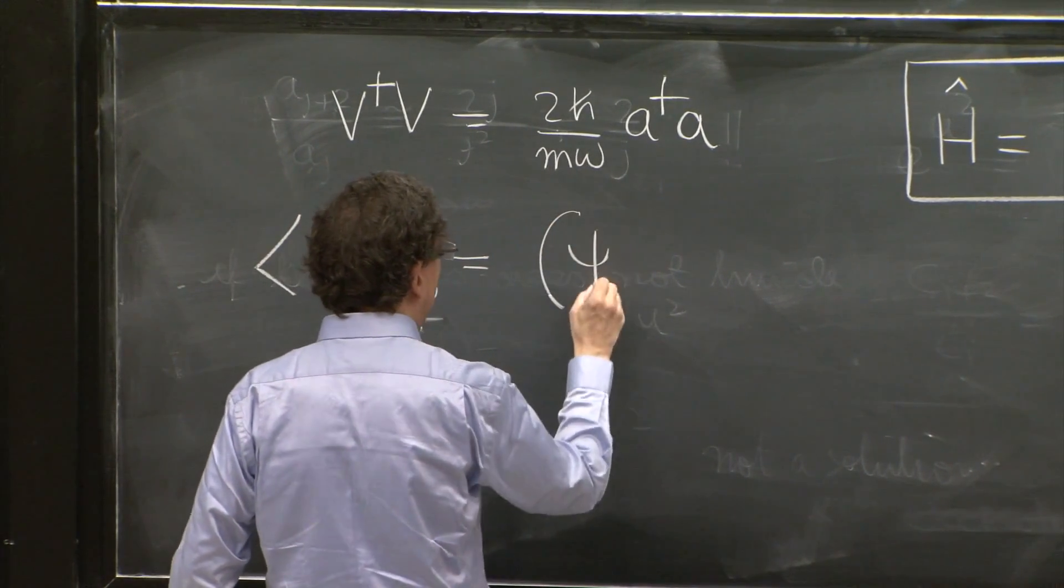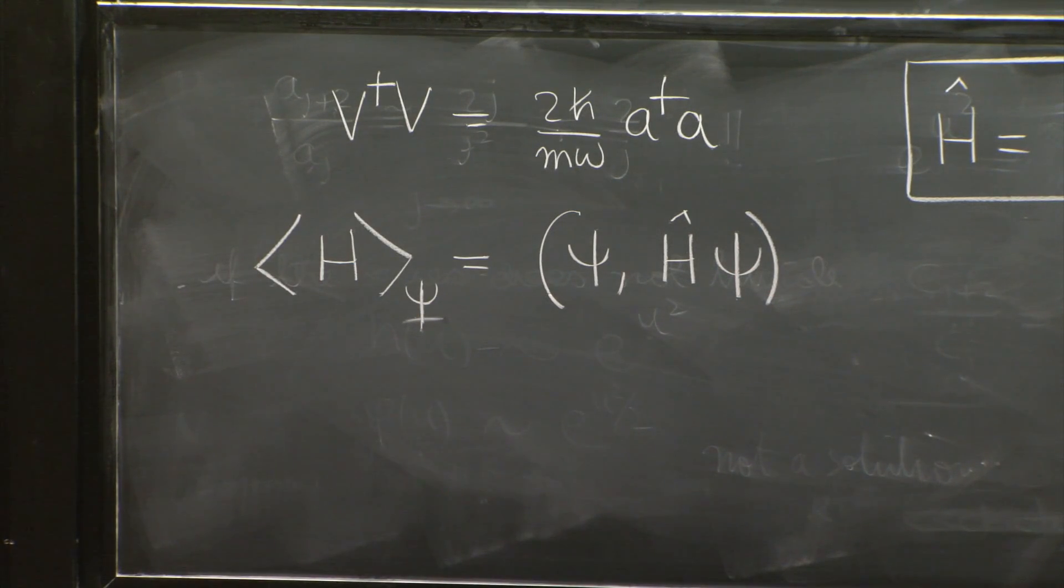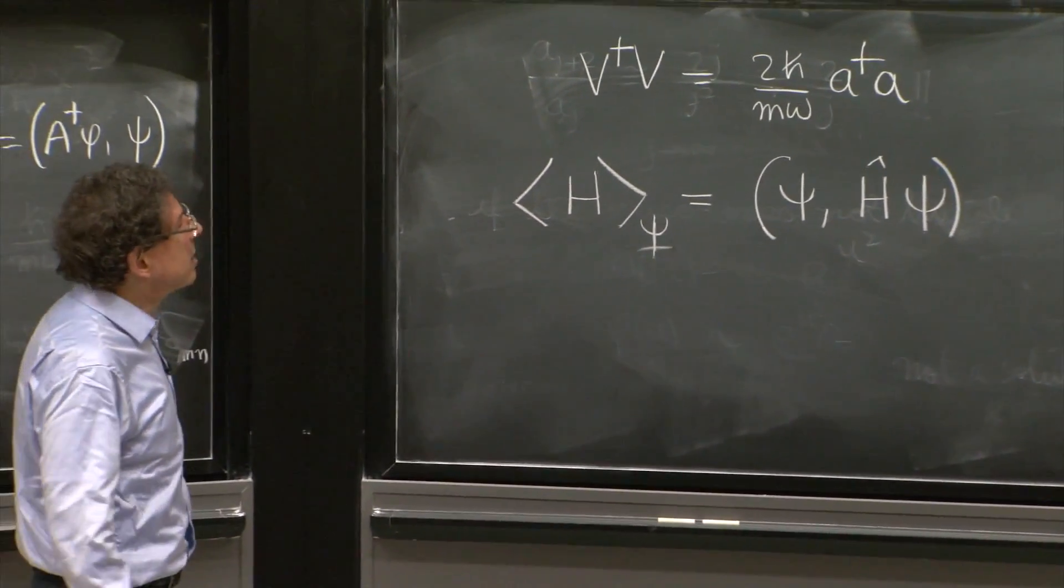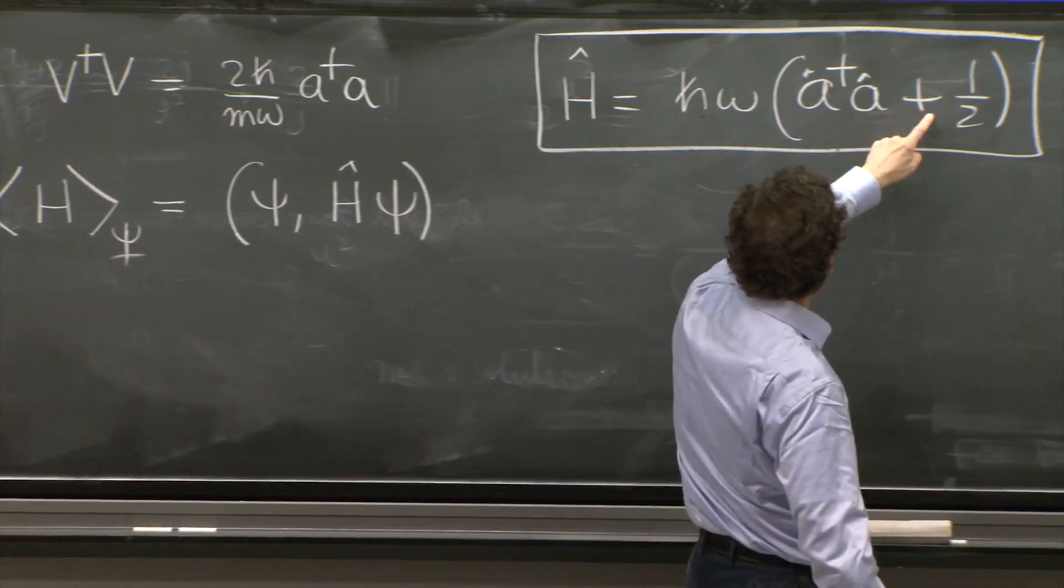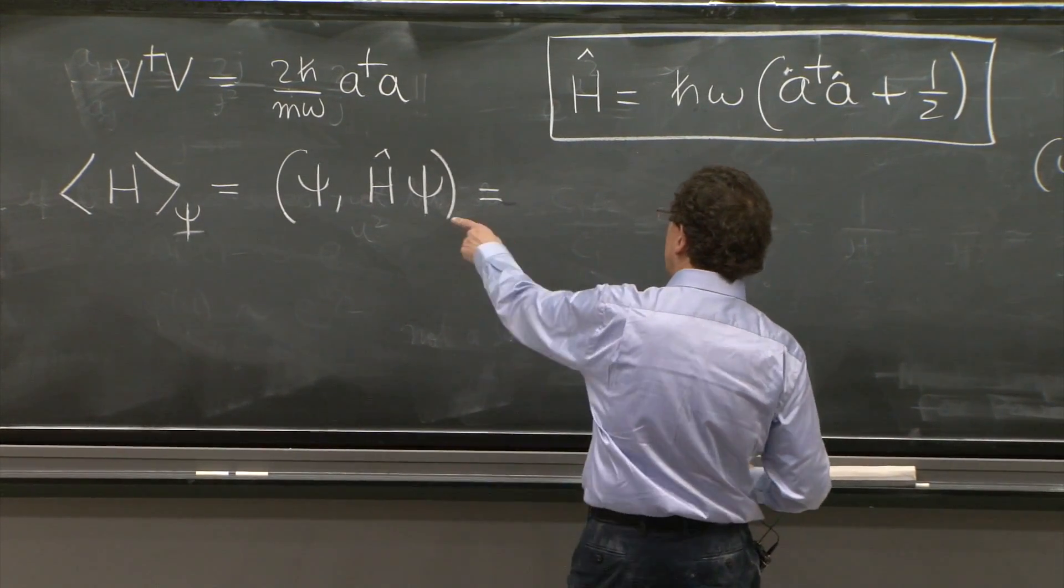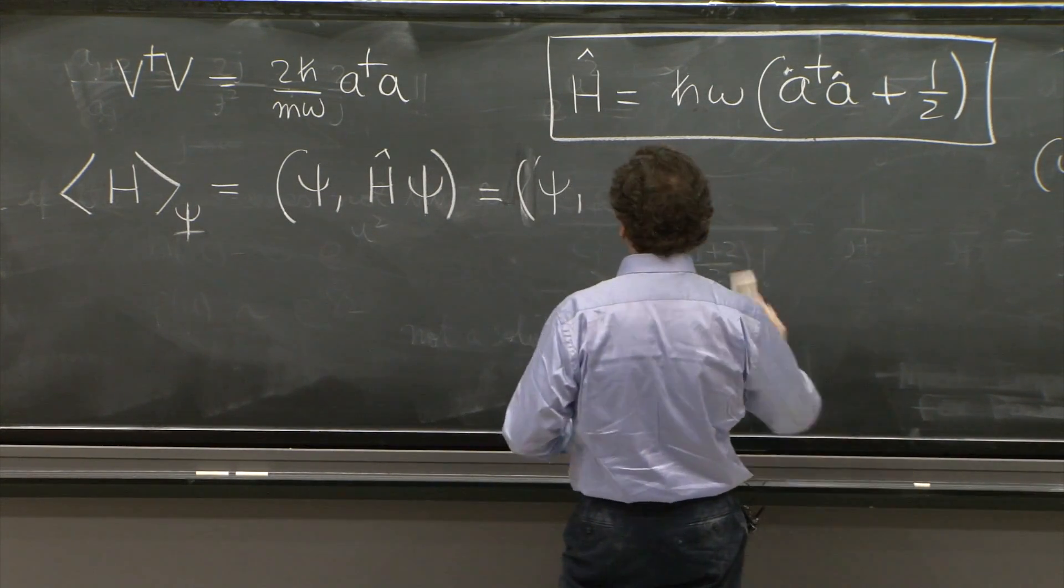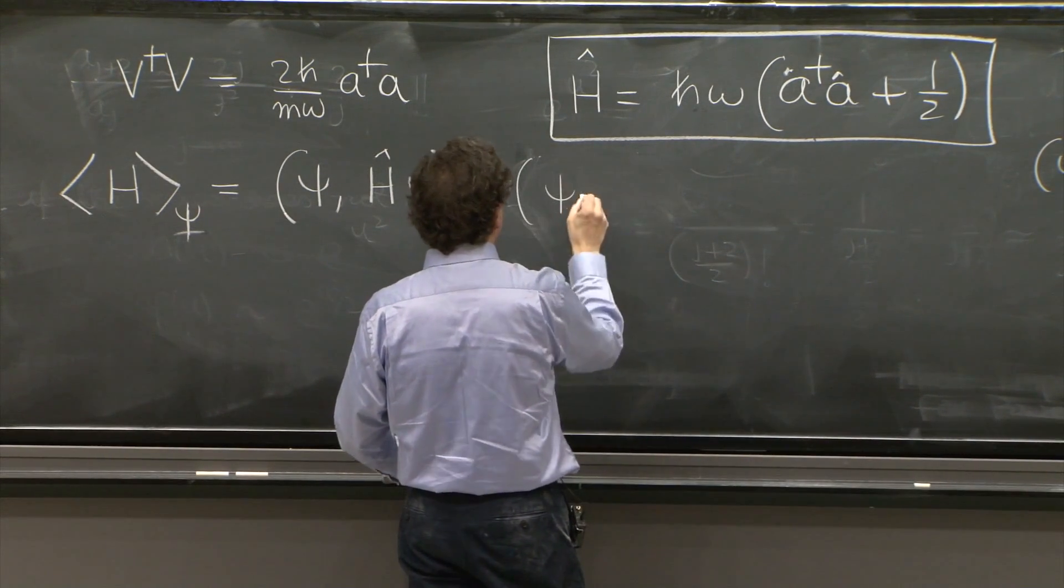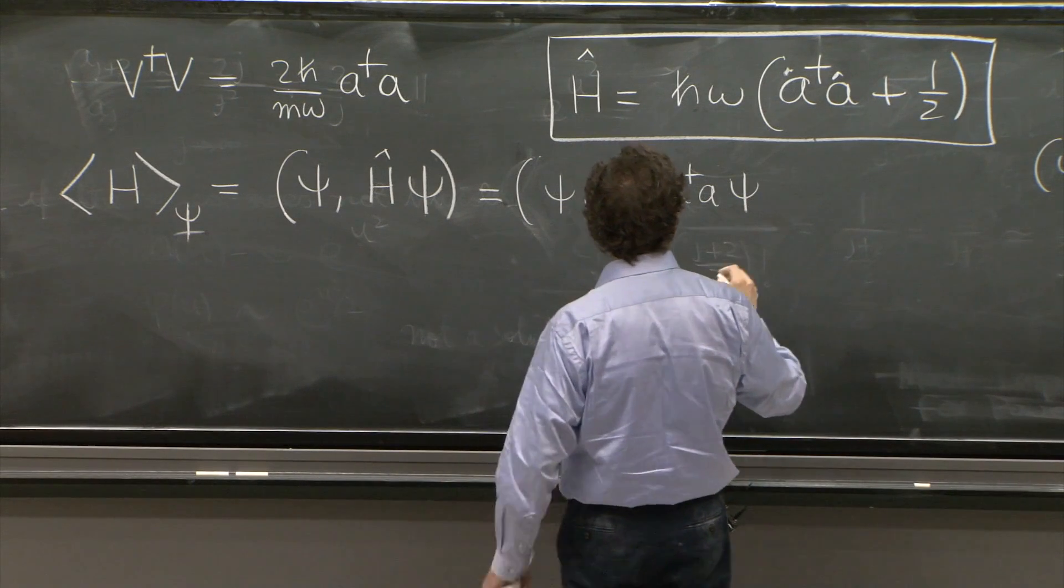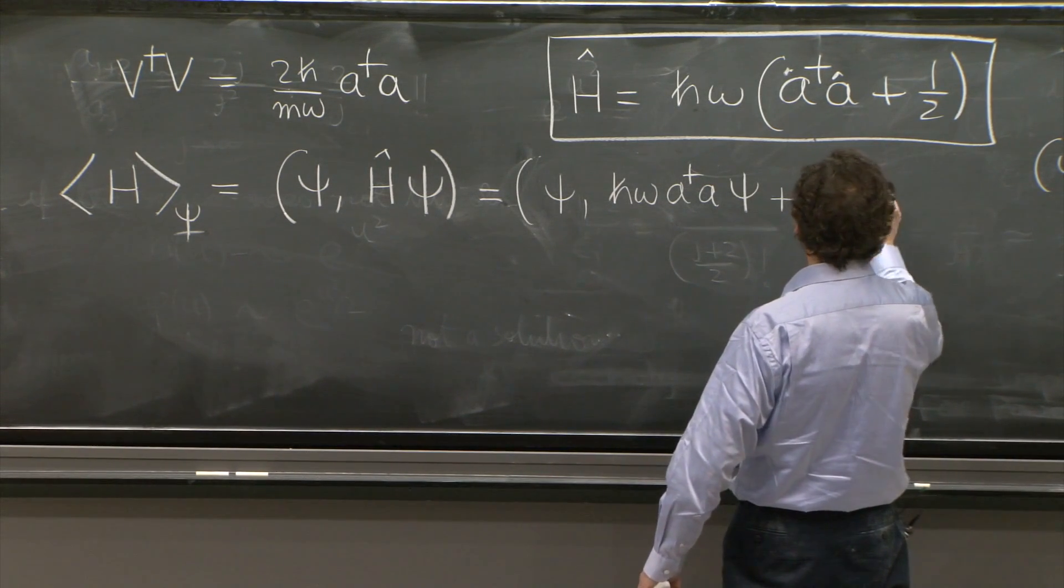You're supposed to do psi H psi. This is a normalized state. Expectation value is the integral of psi star H psi. That's what this is. But now, let's put in this information. And the expectation value of this would be psi H. Well, let me do it this way. H bar omega. Well, let's go slow. So psi h omega a dagger a psi plus h omega over 2 psi.